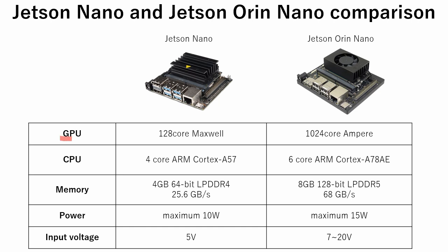The first difference is the GPU. Jetson Nano used Maxwell architecture, but in Orin, Ampere architecture is used. By using smaller transistors, significantly more transistors are packed into a smaller area than before, allowing computation speed to increase dramatically.